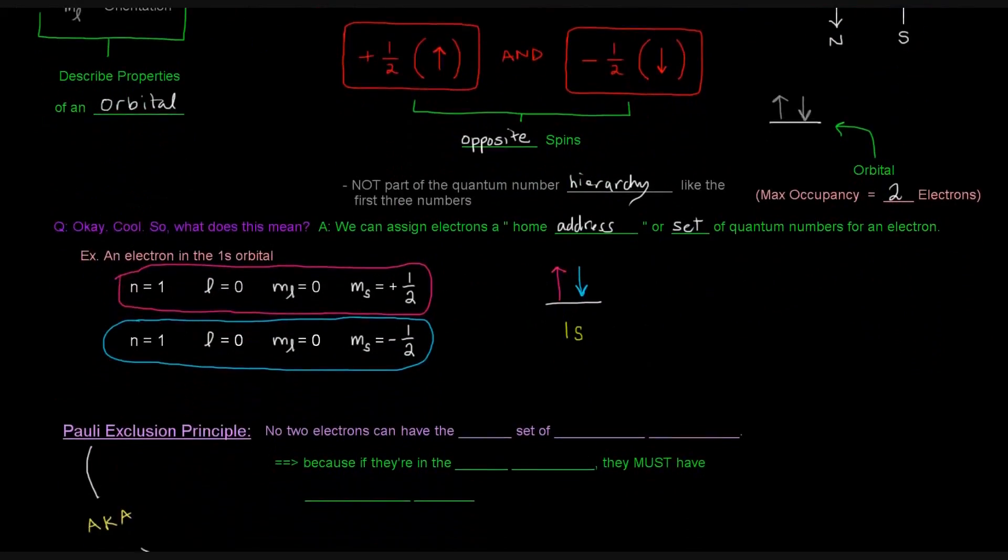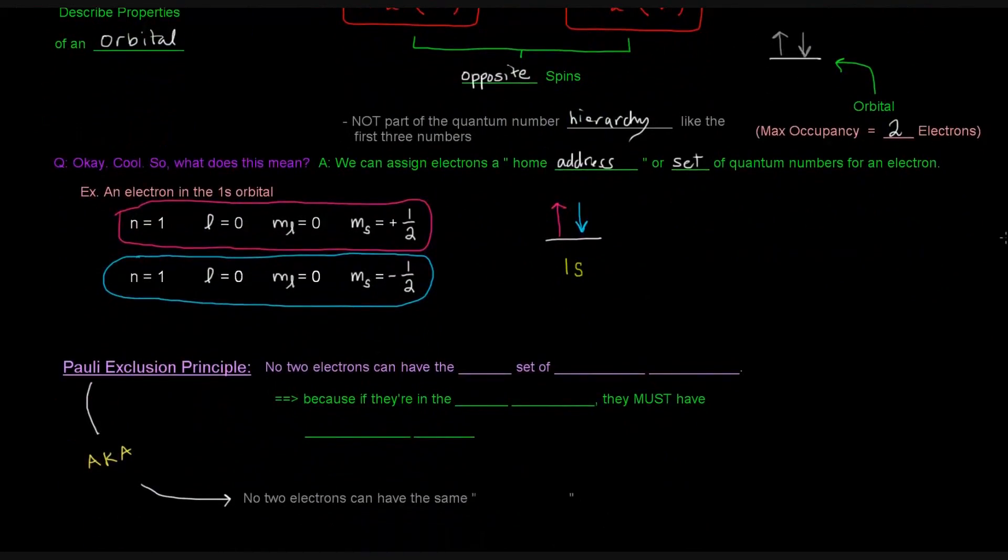Which brings me to the Pauli exclusion principle, which basically says that no two electrons can have the same set of quantum numbers. Because if they're in the same orbital, they must have opposite spins.